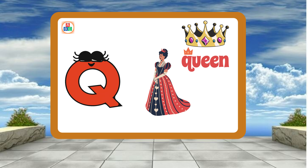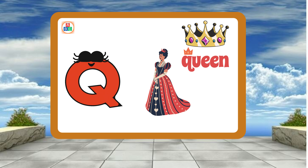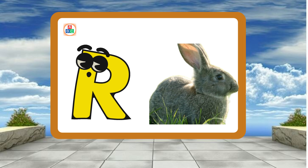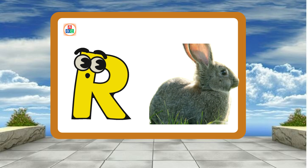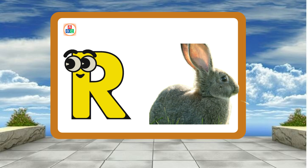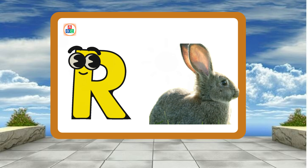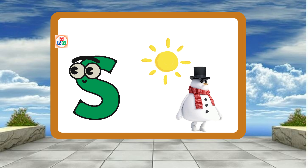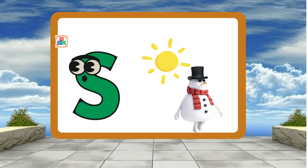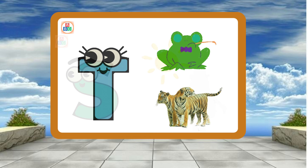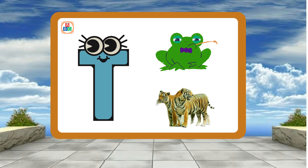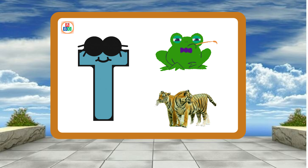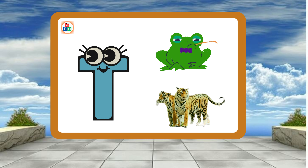Q is for Queen. Q-Q-Queen. R is for Rabbit. R-R-Rabbit. S is for Sun. S-S-S-Sun. T is for Toad. T-T-Toad.